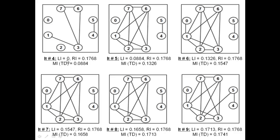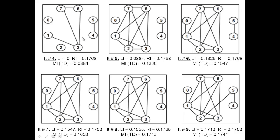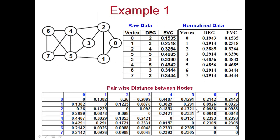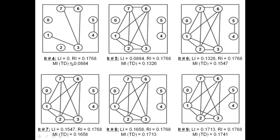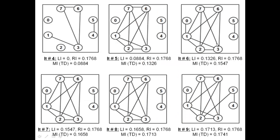The new middle index is 0.0884. With this threshold, we retain only edges where Euclidean distance is ≤ 0.0884. For example, the distance between vertices 0 and 1 is 0.1382, which is greater than 0.0884, so that edge is removed. The distance between vertices 3 and 6 is 0.0048, so that edge is retained. The resulting graph is not connected, so we move the left index to 0.0884.